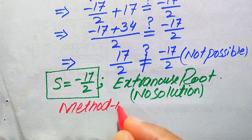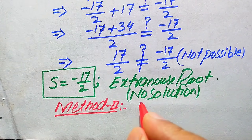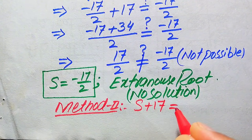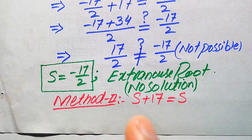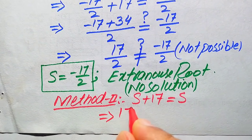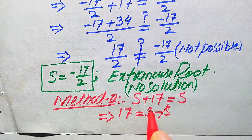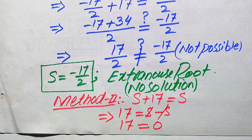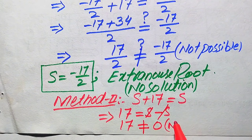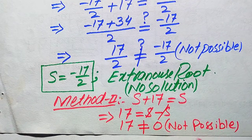Now we move to the second method. We copy down the given equation: √(s + 17) = s. Here we move s to the right-hand side, giving √(s + 17) − s = 0, which simplifies directly: 17 = 0. Both sides are clearly not equal, so 17 = 0 is not possible.